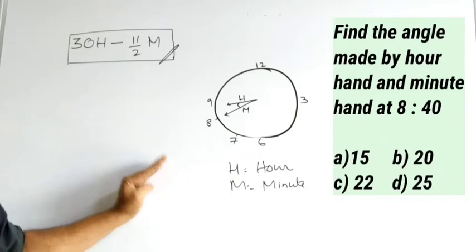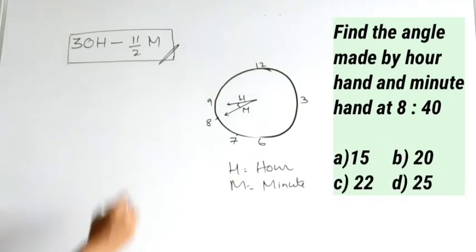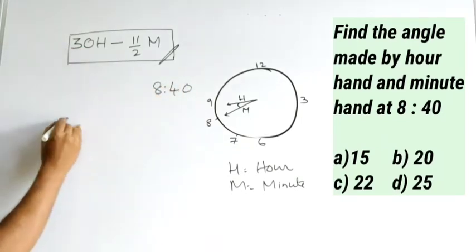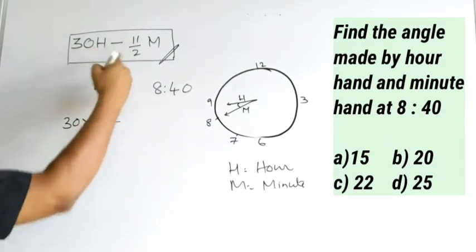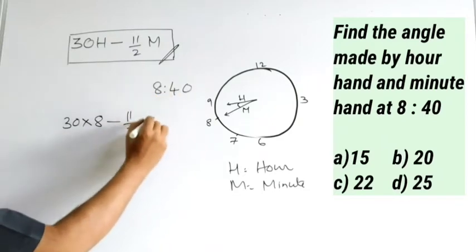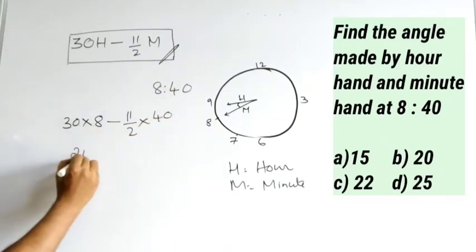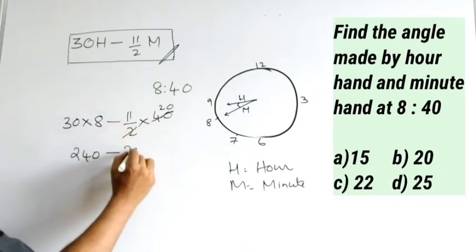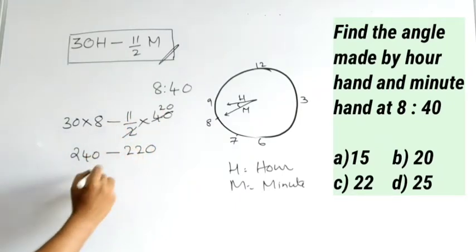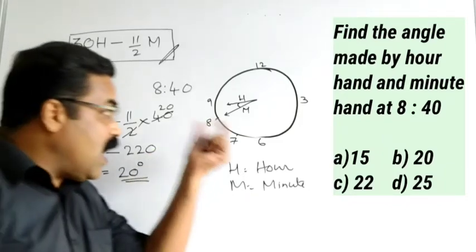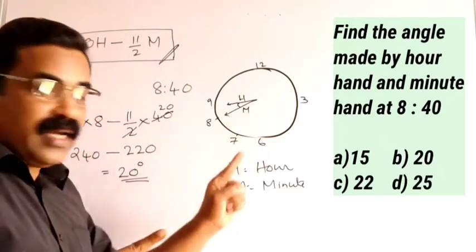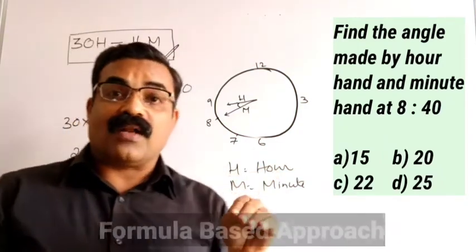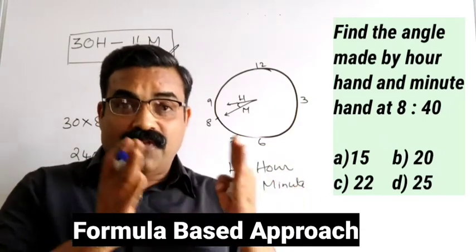The question is: find the angle between the two needles when the time is 8:40. So we apply: 30 into 8 minus 11 by 2 into 40. That is 240 minus 220, which gives 20 degrees. So 20 degrees is the angle between the hour hand and minute hand.